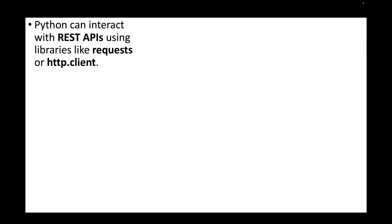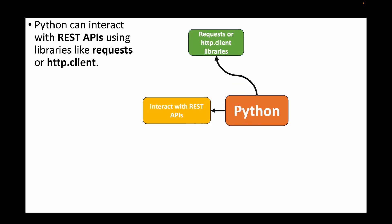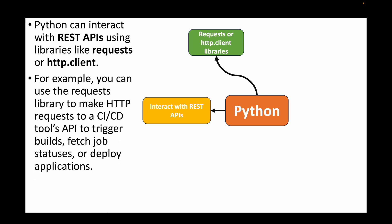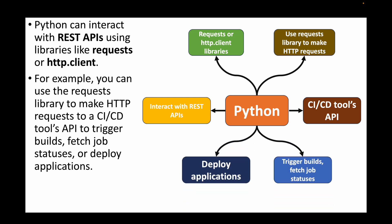The next question is: how can you use Python to interact with REST APIs in a DevOps pipeline? We can make use of libraries like 'requests' or 'http.client' to interact with REST APIs. For example, using the requests library to make HTTP requests to a CI/CD pipeline — to trigger builds, fetch job status, or deploy applications. These libraries make the API calls to your CI/CD pipeline and retrieve the information from it.